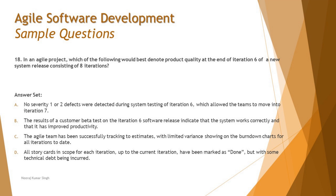Option B says: the result of a customer beta test on the iteration six software release indicates that the system works correctly and that it has improved productivity. This is bang on. The customer is involved, and beta testing is conducted from the perspective of meeting the desired needs of end users. If beta testing shows the system works correctly, that defines product quality — meeting customer expectations.